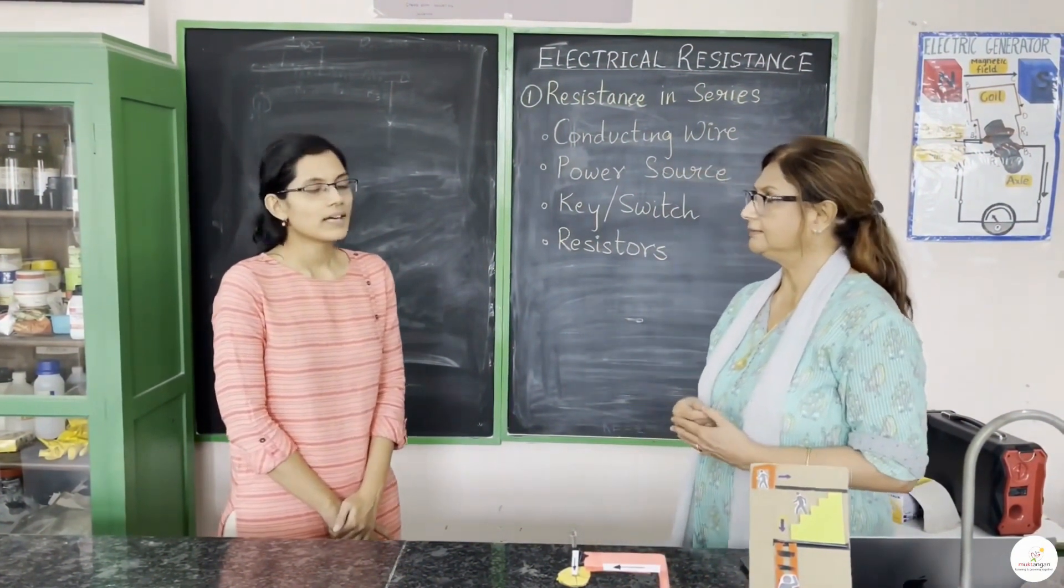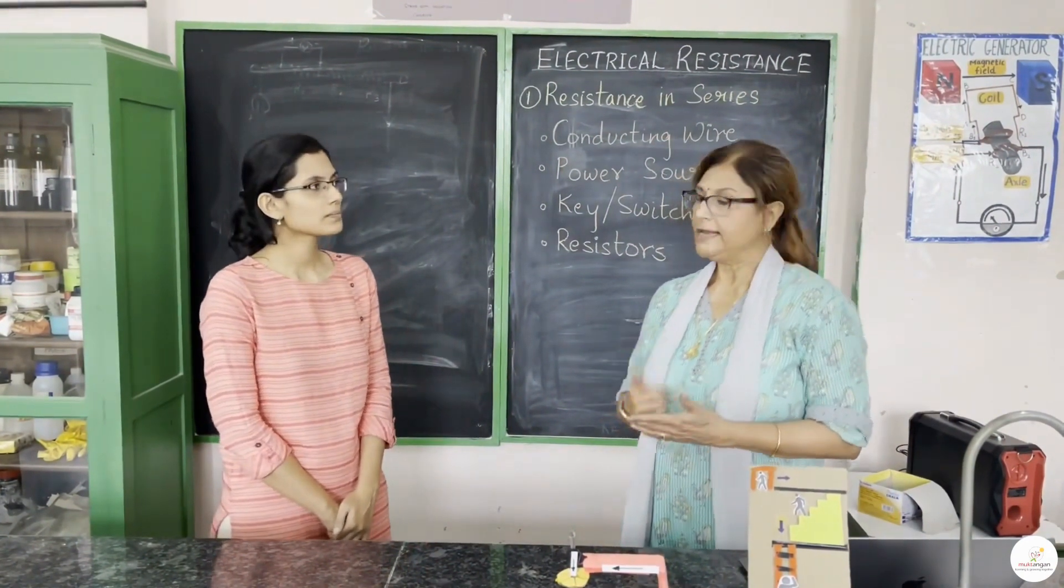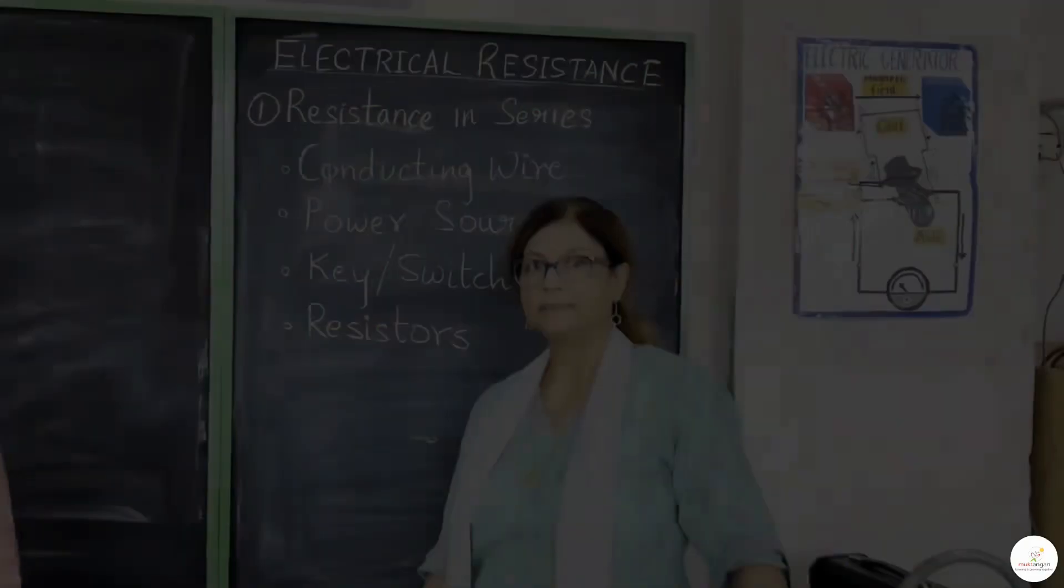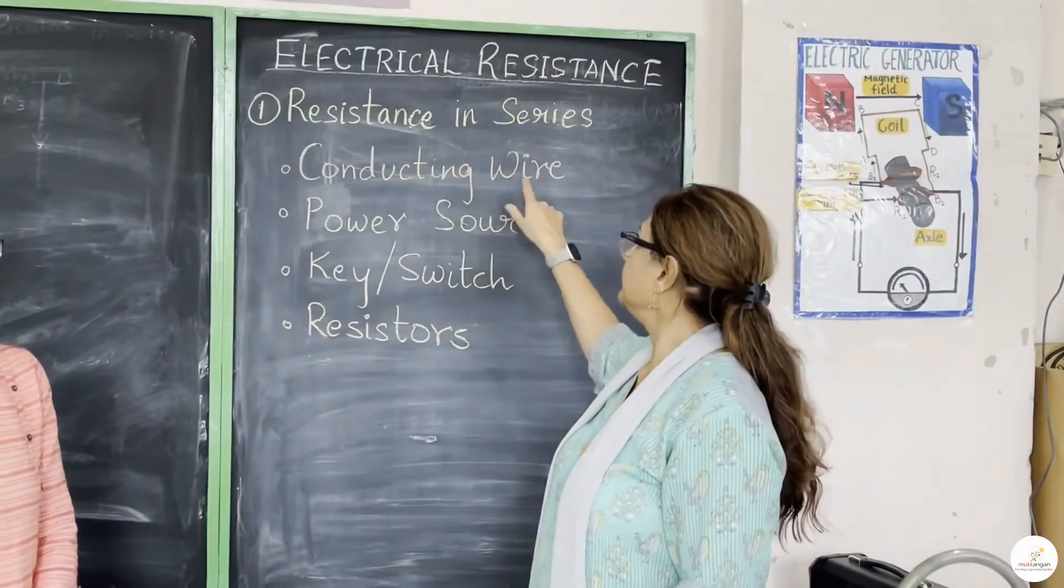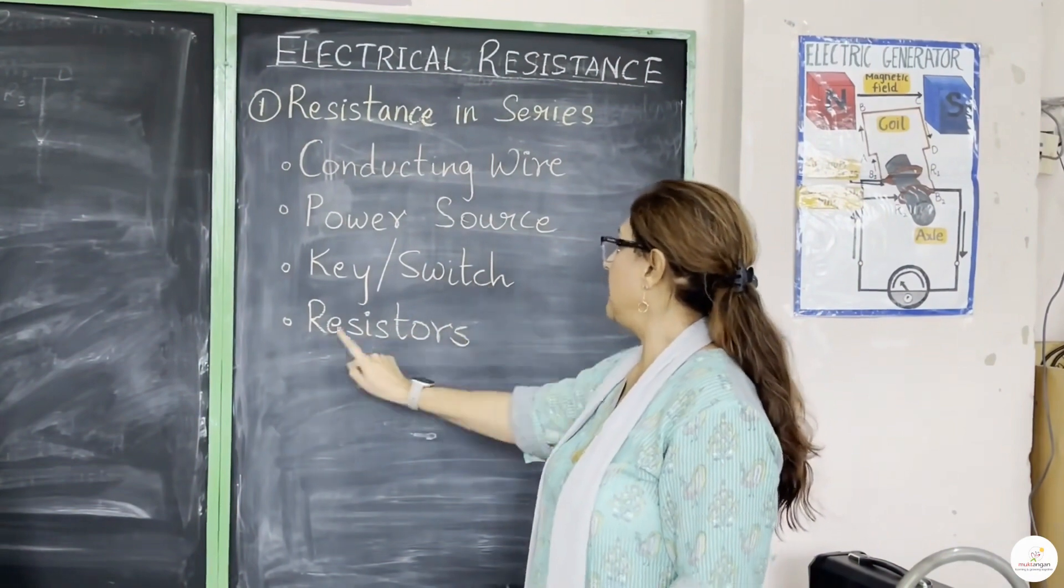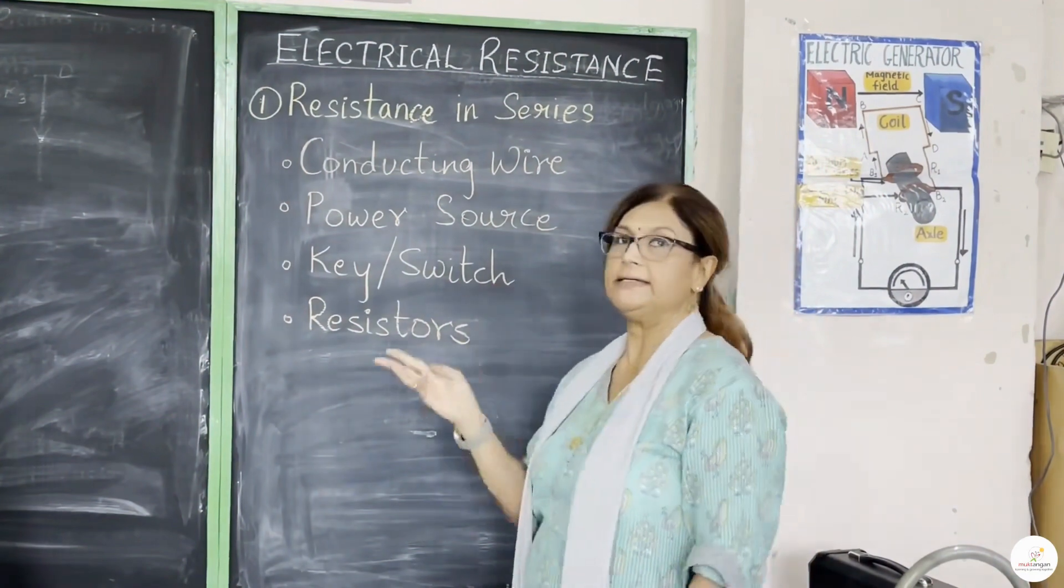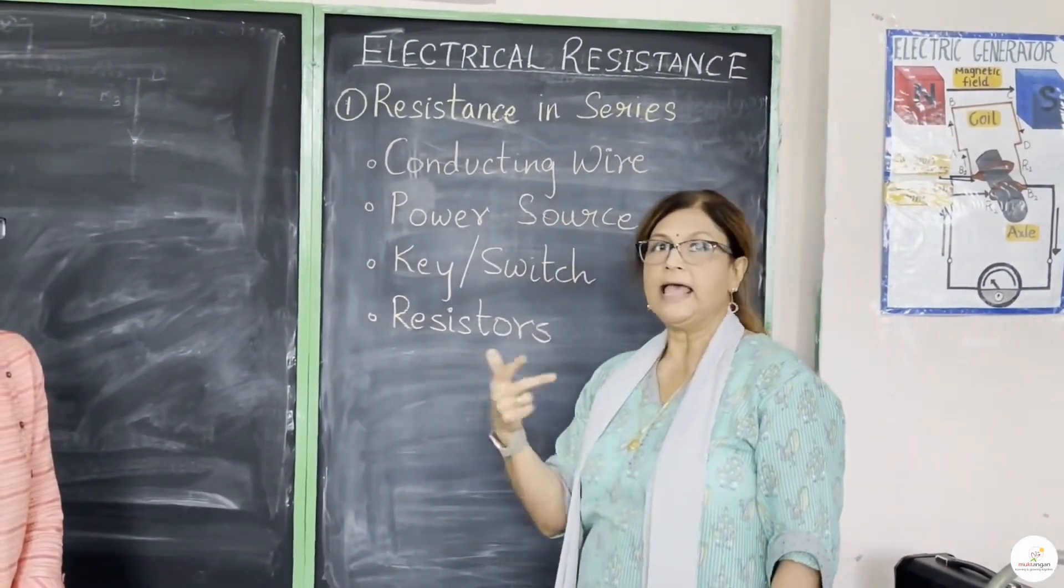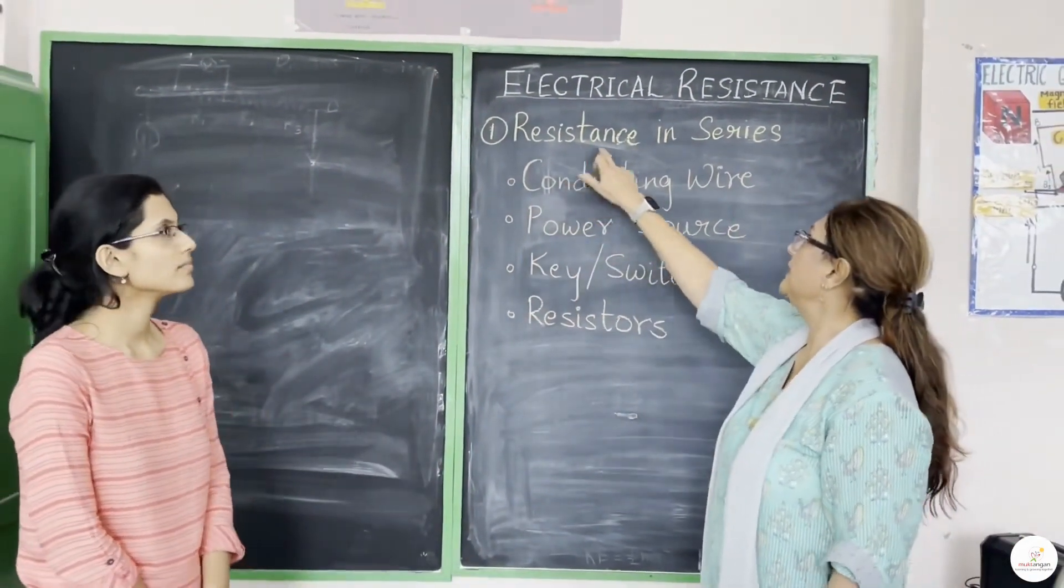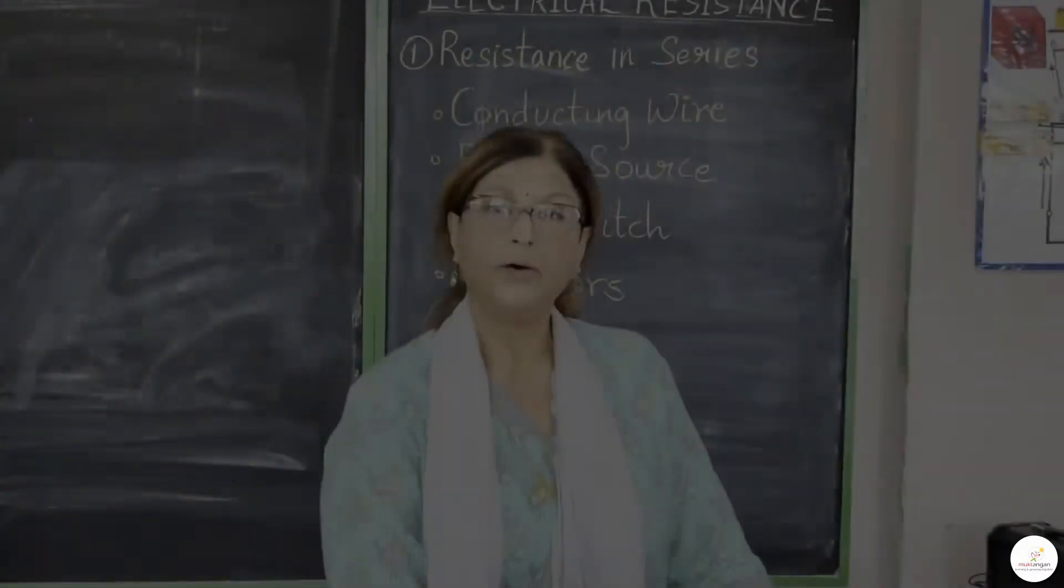And what is a circuit? It is a circular path through which electricity flows. Yes, that's correct. And you know a circuit has more than one component, such as conducting wire, power source, key also known as switch, and resistors. You also know that these resistors can be connected in two different ways: in series and in parallel. In today's session, we will be talking about resistance in series. So, let's start.